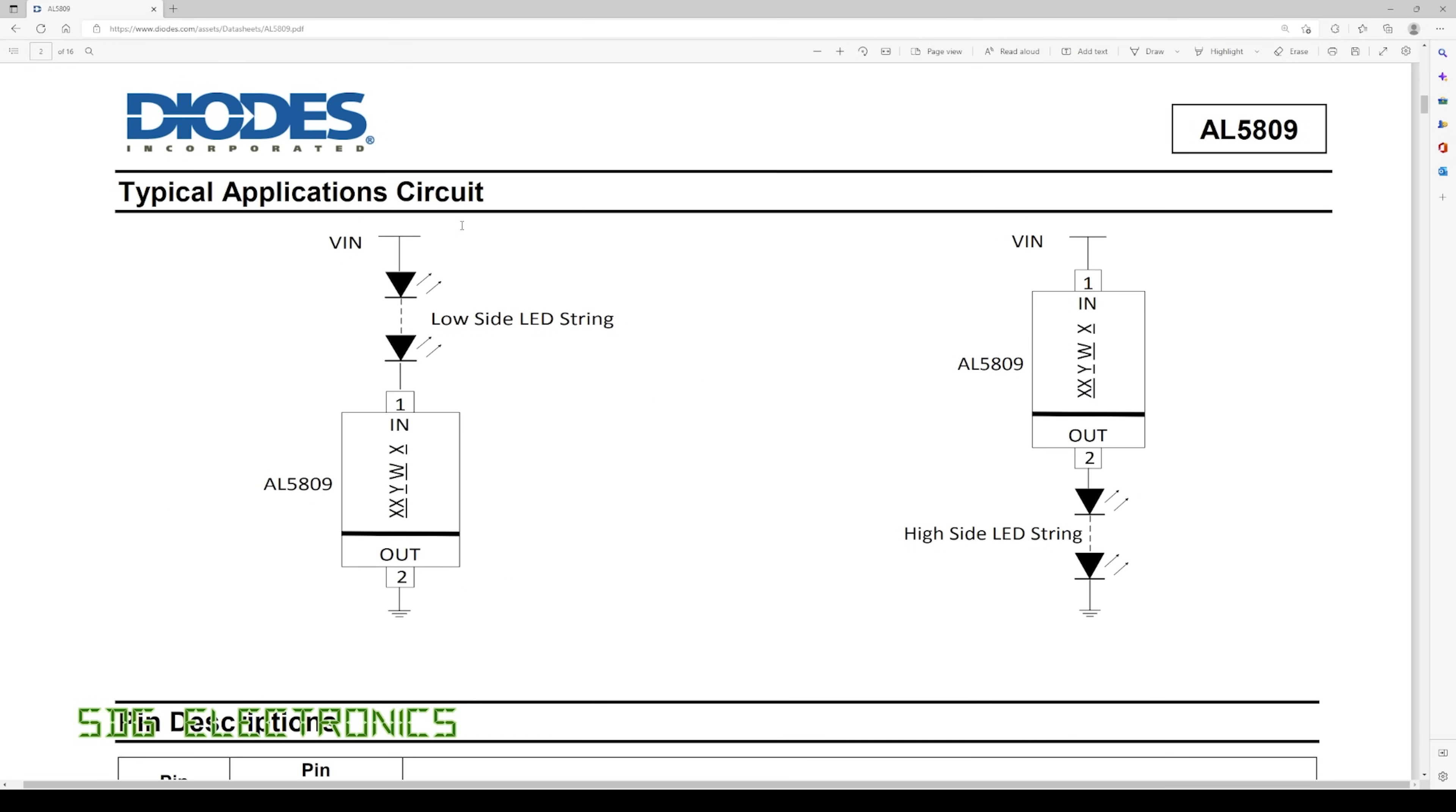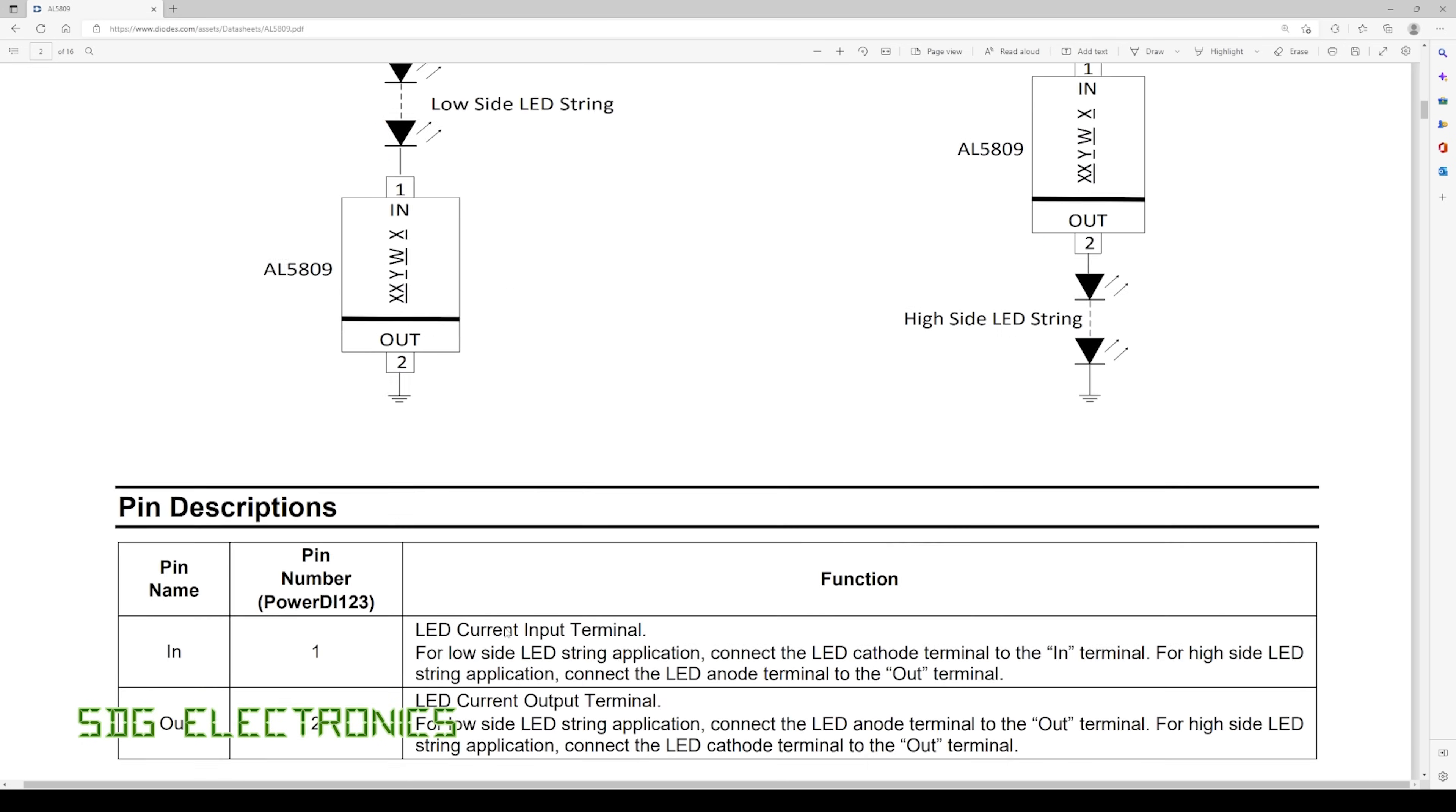You just simply put them in the series string of LEDs and it will limit the current provided there is enough voltage drop between pin 1 and pin 2.